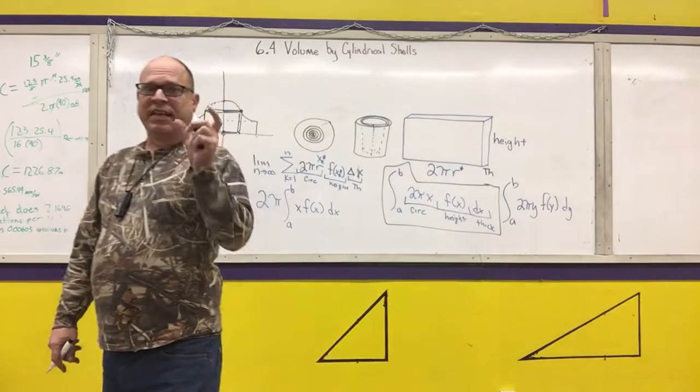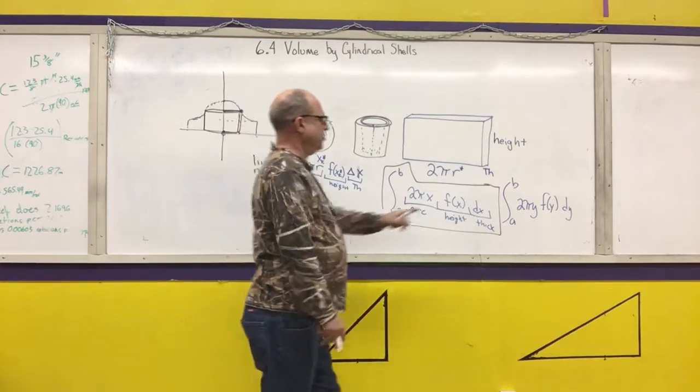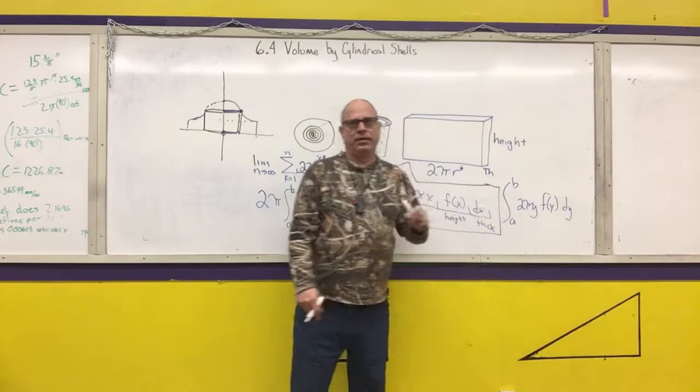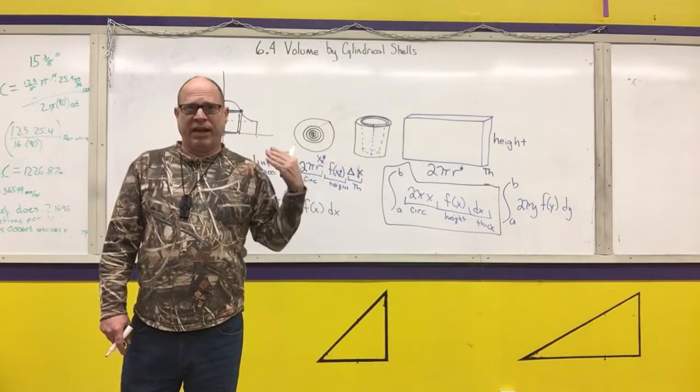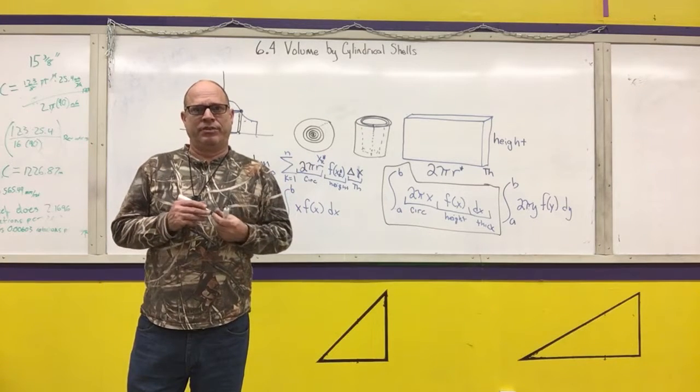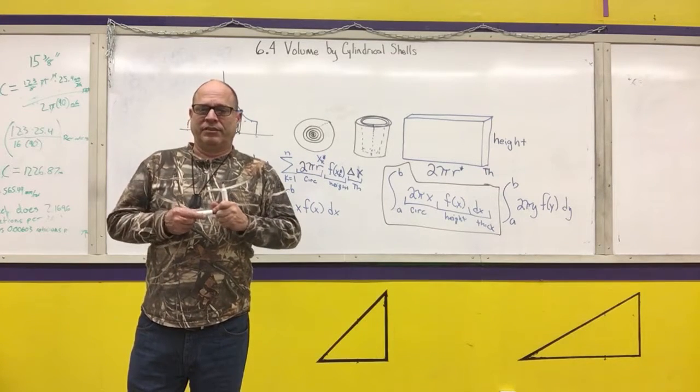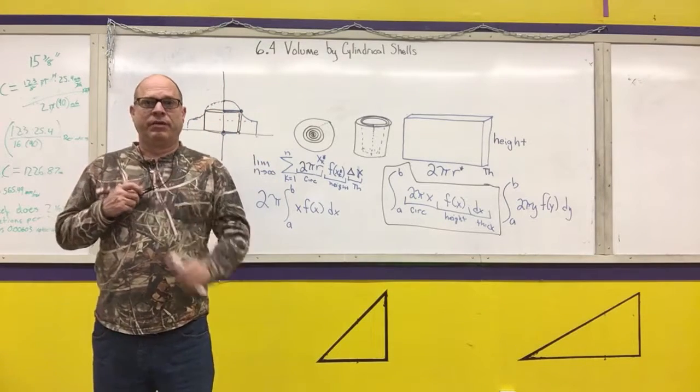Remember, 6.3 formulas had a pi in them. The 6.4 formulas are all going to have a 2 pi in them. And remember, 2 pi is a constant, so we'll be able to bring it out in front of the integral before we do our anti-differentiation and evaluation. So, next thing is going to be our examples for section 6.4, and that will be it for this week. We'll see you next week.